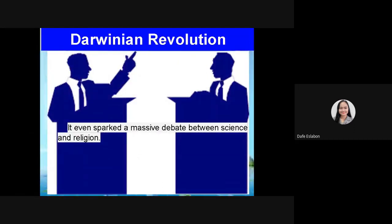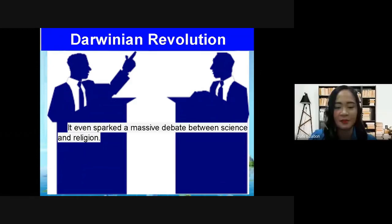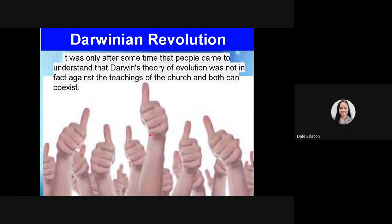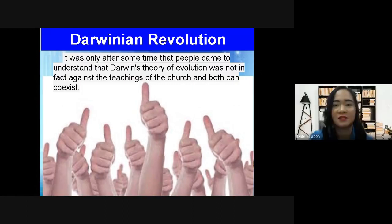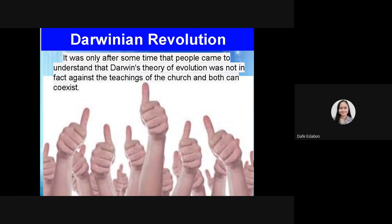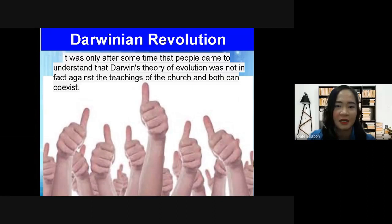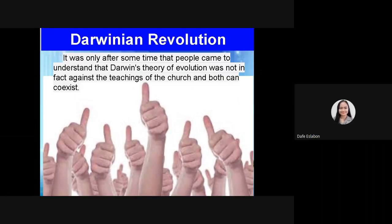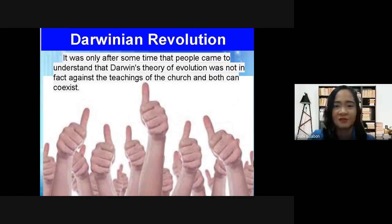The Darwinian Revolution sparked a massive debate between science and religion. It was only after some time that people came to understand that Darwin's theory of evolution was not against the teachings of the church, and both could co-exist — similar to how Copernicus's theory was first rejected but later accepted because it could explain many questions about the universe. Darwin's theory was also first not accepted, but later some people started to accept it, while others still remained with the divine theory.